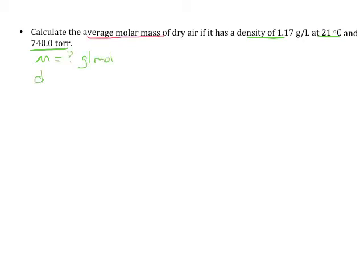We know that our density is 1.17 grams per liter. We know that our temperature is 21 degrees C and that our pressure is 740 torr. Again, we can use that same equation. We're just going to rearrange it so that it's solved for molar mass. So solving for molar mass, M is going to be equal to the density times R times temperature all over the pressure.